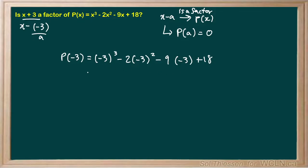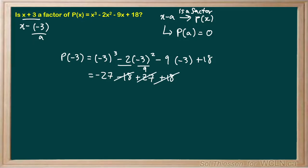Negative 3 cubed gives us negative 27. Negative 2 times negative 3 squared, which is 9, gives us negative 18. Negative 9 times negative 3 gives us positive 27. And then we have plus 18. So the positive 18 and negative 18 cancel, the positive 27 and negative 27 cancel, and we have 0.